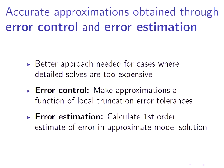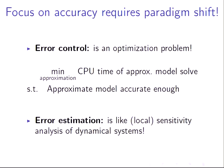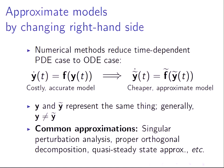The error control's main premise is that it's an optimization problem. The idea is that you want to minimize the CPU time it takes to solve your approximate model, selecting from a range of different approximations, subject to the constraint that your approximate model is accurate enough for your purposes. The error estimation is a lot like sensitivity analysis of ordinary differential equations — the equations are very similar. When I talk about approximations, I mean a time-dependent PDE where numerical methods reduce this to a set of ODEs. Common approximations include singular perturbation, proper orthogonal decomposition, and quasi-steady-state analysis, among others.